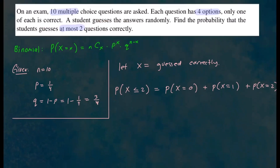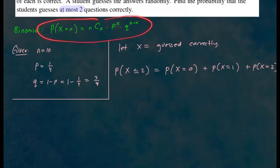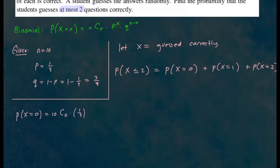Using the binomial probability formula, for probability that x equals zero: 10 choose 0, times one fourth to the zero power, times three fourths to the 10th power. If you put this in your calculator, you get about 0.056.